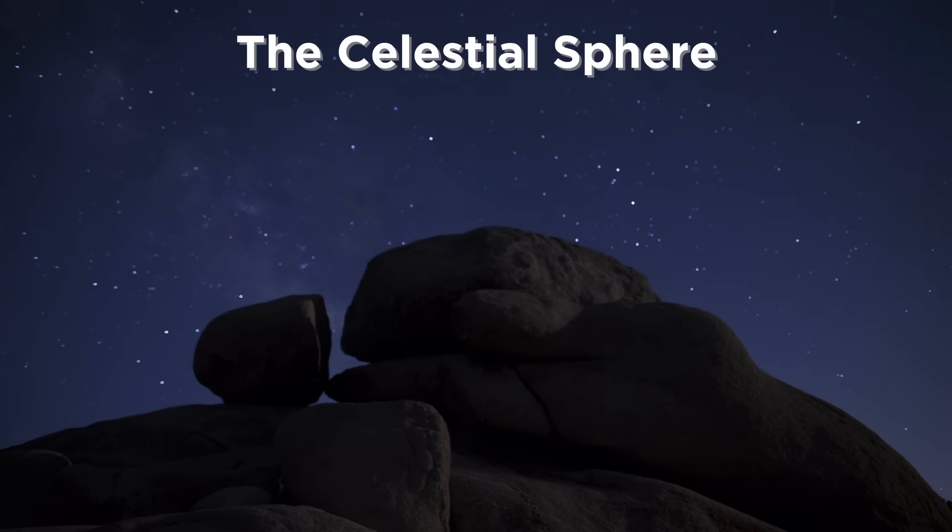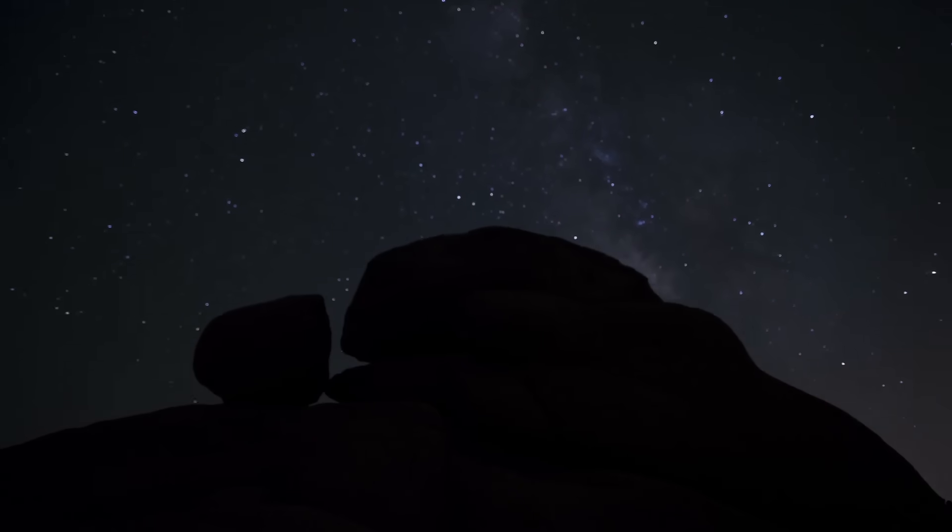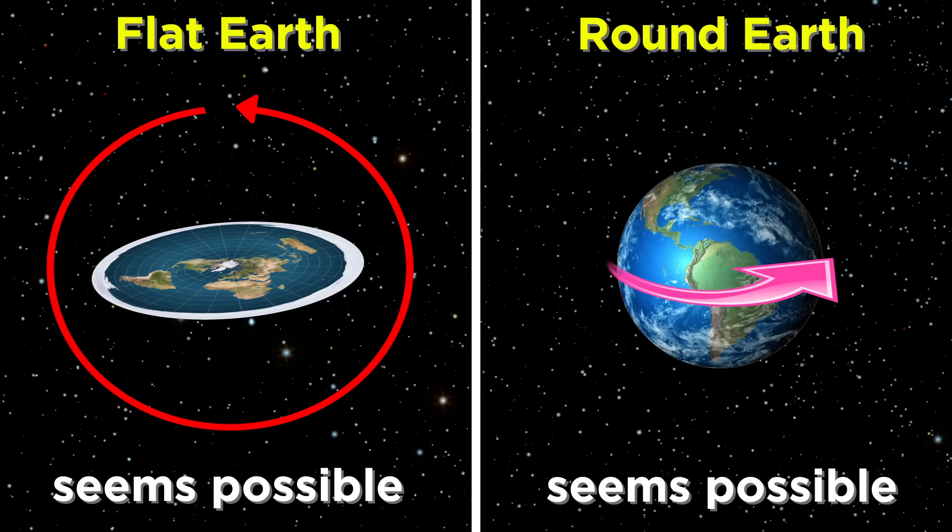First, let's just look at the celestial sphere. We look up and we see stars and planets going around. The flat earth model says we stay still while everything goes around us, and the round earth model says we rotate, which is what causes the apparent motion of objects in the sky. At face value, with no further investigation, these are two completely valid hypotheses. Either of them could feasibly explain what we see in the sky.